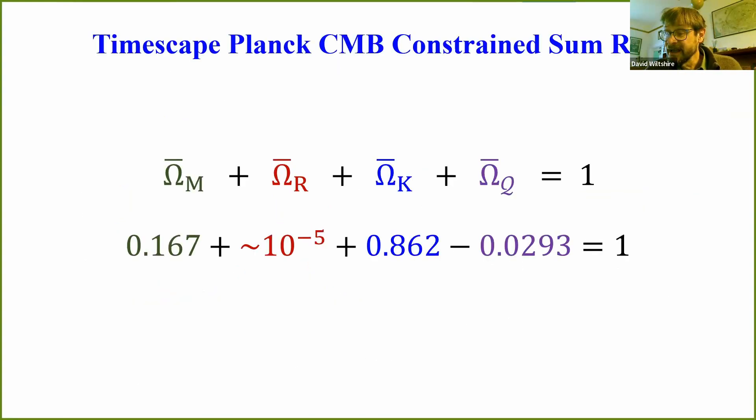There is a sum rule, it is constrained. And these numbers are important, so we've got matter, so this is from the Buchert equations. And those numbers are important, those numbers are constrained.